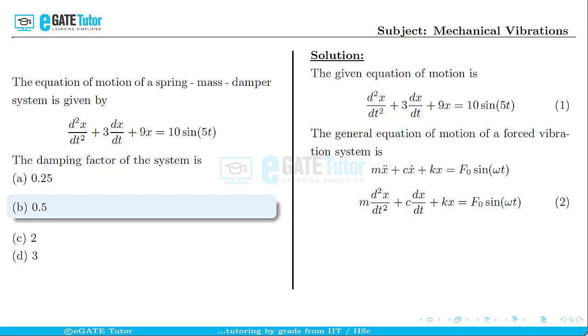Now let us try to compare equation 1 and equation 2. When we compare the coefficients of d²x/dt², we get m = 1 kg.